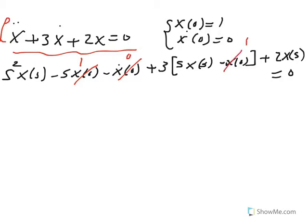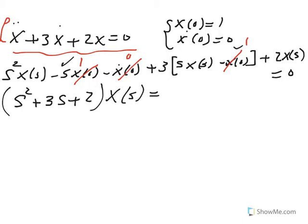After you clean this up and factor x of s, you end up getting s squared plus 3s plus 2 times x of s. And then these terms that are generated from the initial condition go to the other side and become s plus 3.